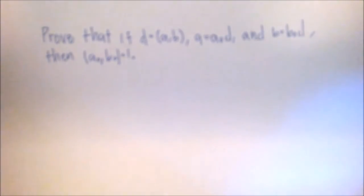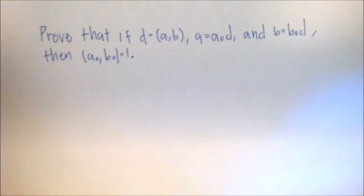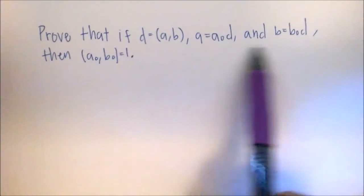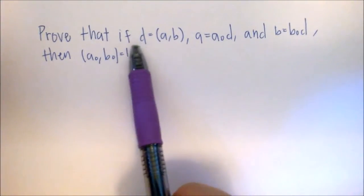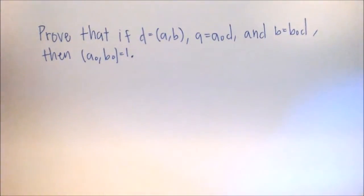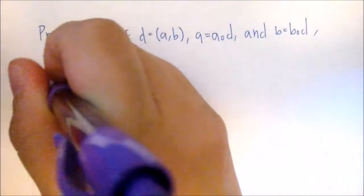Okay, so like with any proof, the first thing we're going to do is write out our knowns, write out our assumptions. So that's going to be the if statement, so the if before the then. So all of this information we're going to go ahead and write out. Alright, proof.